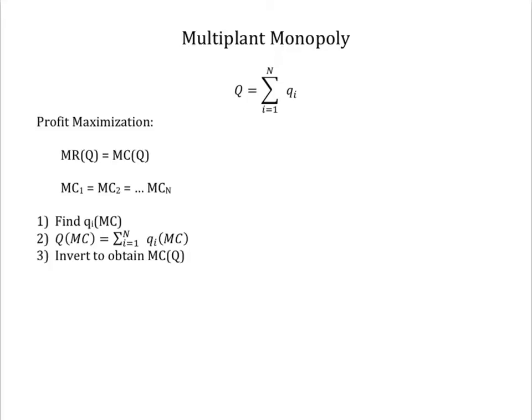Solve that function to determine the marginal cost of each desired level of total output. Now shift to the firm's overall profit maximization problem, that is, find the level of output that equates marginal revenue and marginal cost.